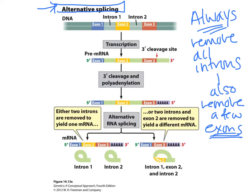So what do I mean? In a normal transcription, we have the primary transcript, 3' cleavage, polyadenylation just like we normally would do, and then we splice out all of the introns as usual. This is our classic splicing.